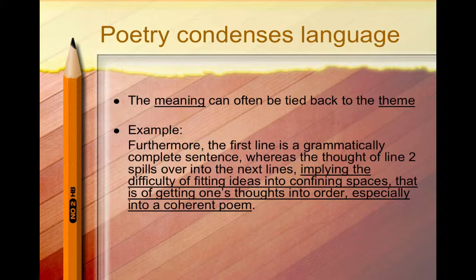The point of writing about a poem is not to simply point out the poetic devices, but to explain how these create meaning in the poem, how they contribute to the theme. For instance, in this example: Furthermore, the first line is a grammatically complete sentence, whereas the thought of line 2 spills over into the next lines, implying the difficulty of fitting ideas into confining spaces, that is, of getting one's thoughts into order, especially into a coherent poem. Notice the writer explains why the lines run over in the poem and how this adds to the theme.